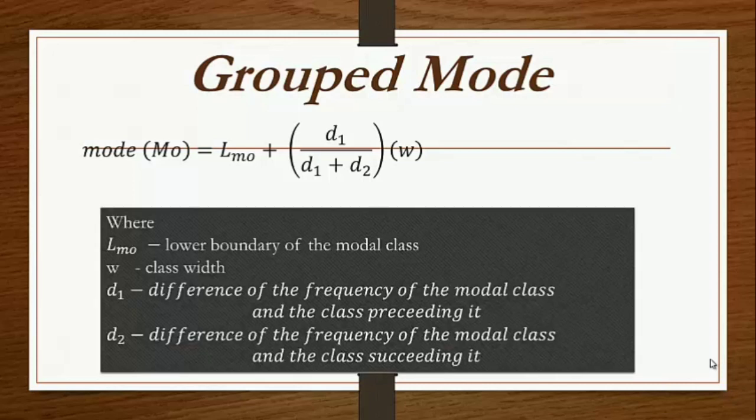In the formula, L sub MO is the lower boundary of the modal class, W is the class width, D sub 1 is the difference between the frequency of the modal class and the class preceding it, and D sub 2 is the difference between the frequency of the modal class and the class succeeding it.